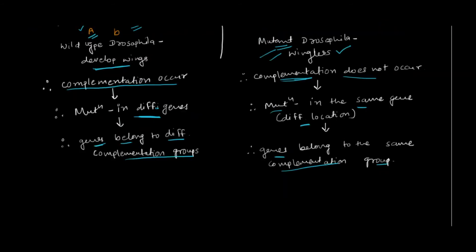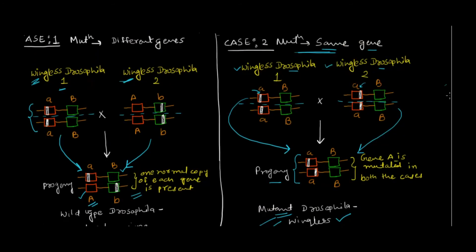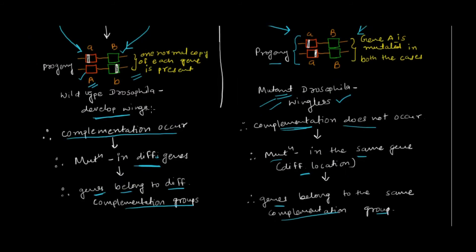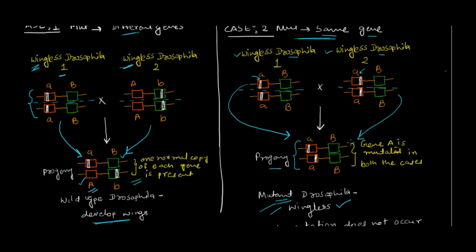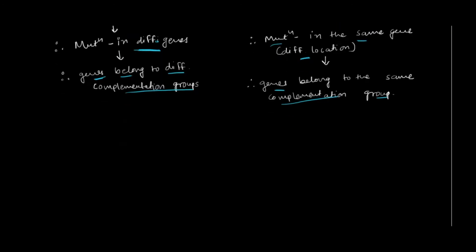To summarize: the complementation test helps us understand whether the mutation is in the same gene or in two different genes. If the mutation is in different genes, the mutant parents give you a normal progeny — complementation has occurred — and the genes belong to two different complementation groups. If two mutants give you a mutant progeny, there is no complementation, the mutation is in the same gene, and those genes belong to the same complementation group.